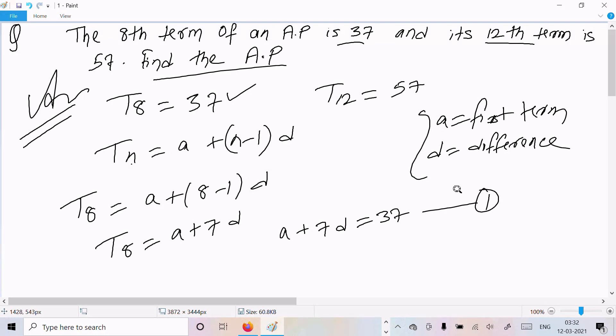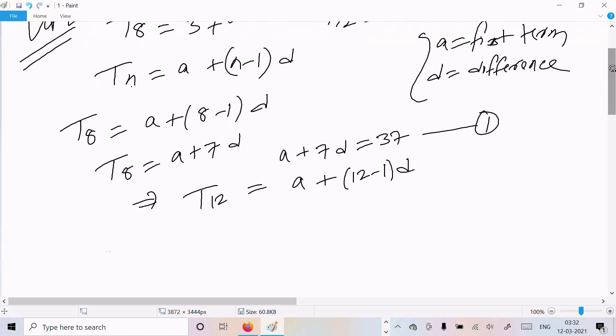Now for t12, t12 equal to a plus 12 minus 1 into d. Now t12 value is 57. So a plus 11d equal to 57. This is equation 2.